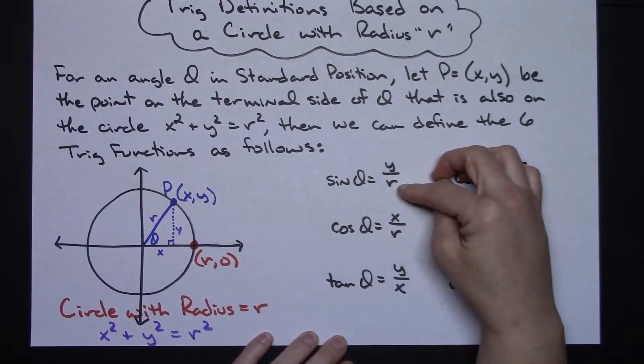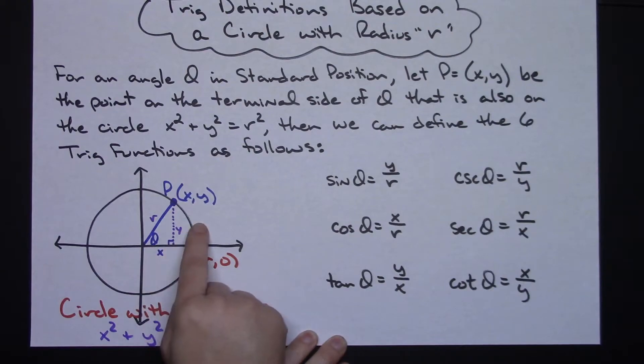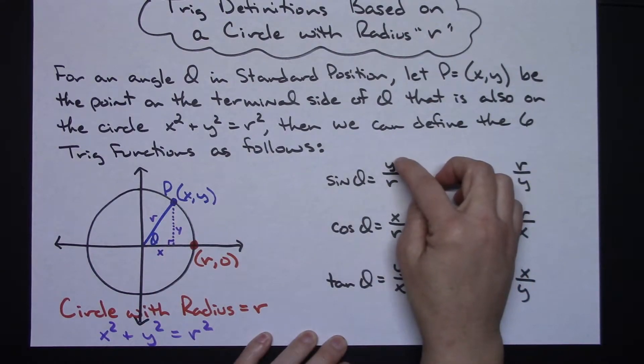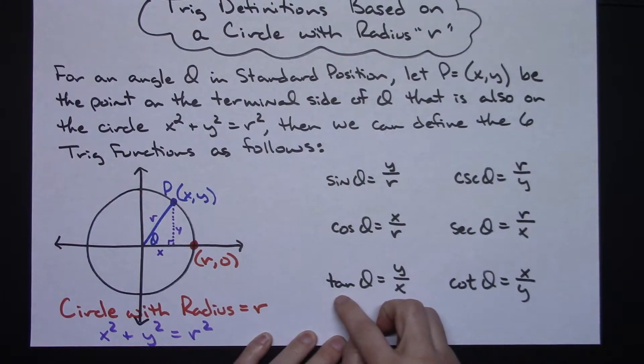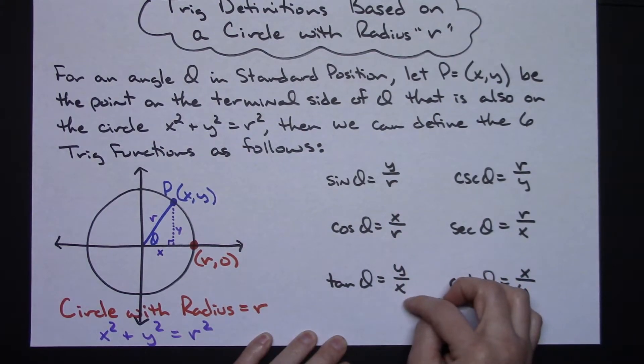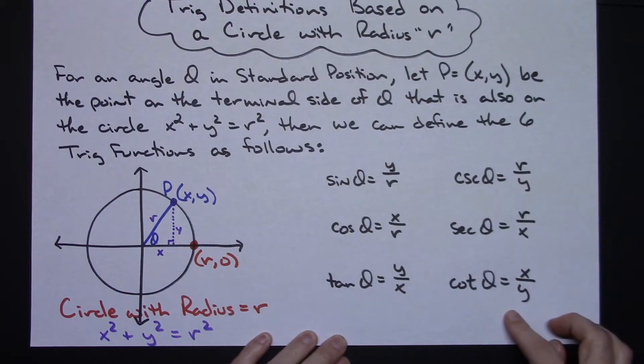And it's very much like your right triangle trig, sine is opposite over hypotenuse. So y over r, cosine, x over r, tangent, y over x, and then the second three,